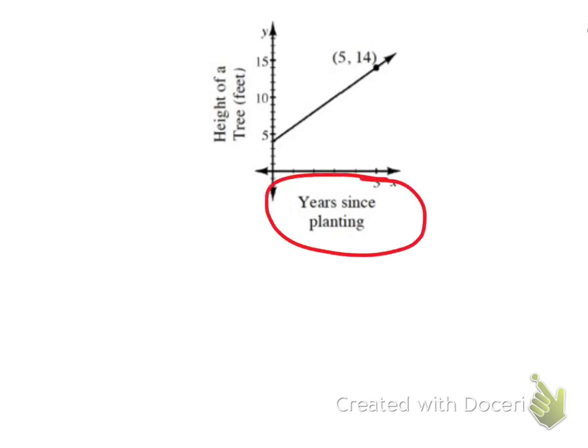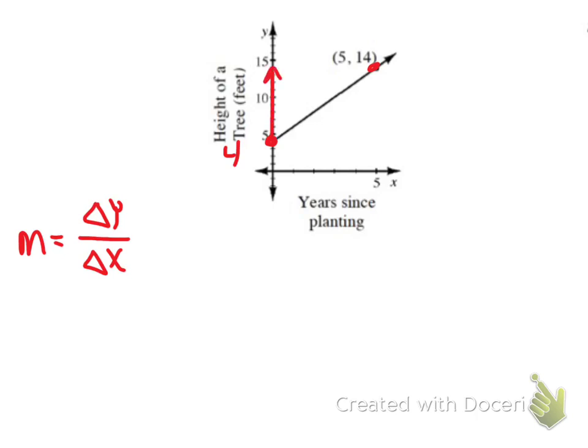First, I'm going to figure out the slope. Slope is our change in y divided by our change in x. This point right here is at 4. The y-value for this point is at 14. So our change in y is going up 10, a positive 10. Our change in x is going from 0 to 5, so the change in x is 5.